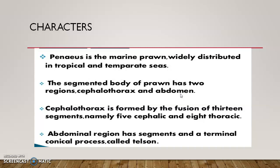Penaeus is the marine prawn which is widely distributed in tropical and temperate seas. There are two regions: cephalothorax and abdomen. The cephalothorax is formed by the fusion of 13 segments — five cephalic and eight thoracic. The abdominal region has six segments, and the terminal conical process is called the telson.